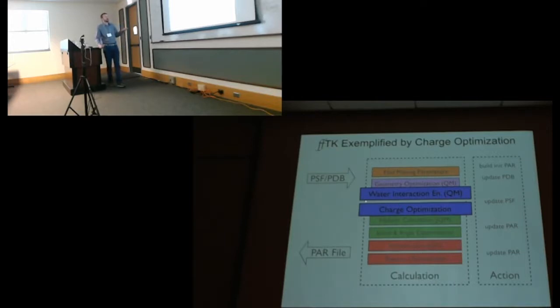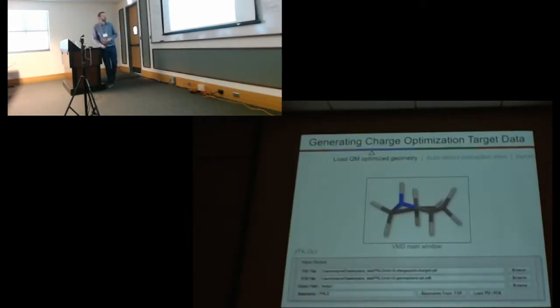I don't have time to go through the whole toolkit today, but I want to show just one step which is indicative of the types of things that FFTK can do. This is going to be a charge optimization which requires computing water interaction energies. This is done at a quantum mechanical level, and then we use this as target data for a multi-dimensional optimization. The preceding step is a geometry optimization to get a low energy conformation as a reference structure.